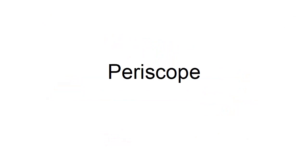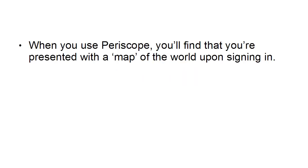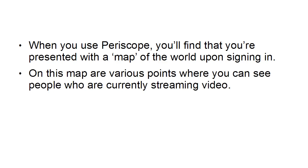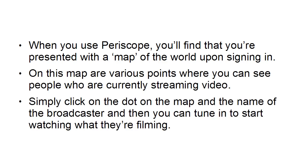Finally, there's Periscope. Periscope is similar to Vine insofar as it streams short videos, but the key difference is that Periscope streams videos live. When you use Periscope, you'll find that you're presented with a map of the world upon signing in, and on this map are various points where you can see people who are currently streaming video. Simply click on the dot on the map and the name of the broadcaster, and then you can tune in and start watching what they're filming. It's a bit like having your own TV station in that respect.